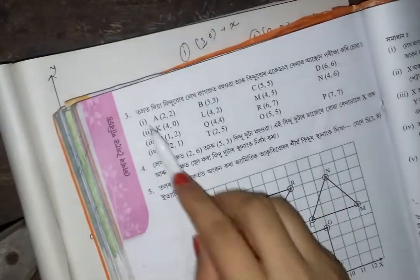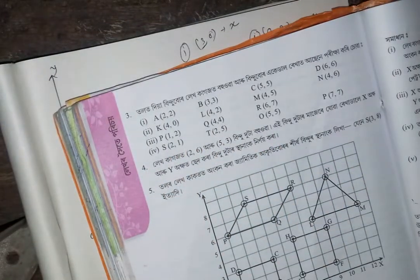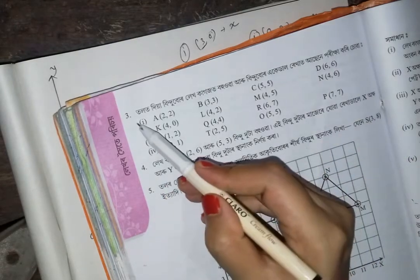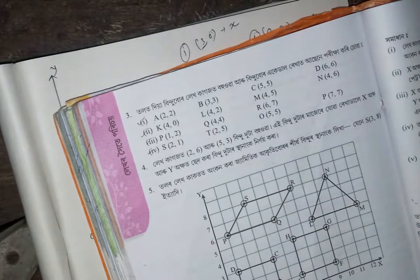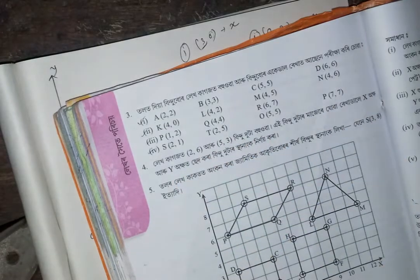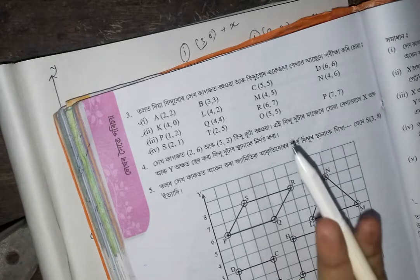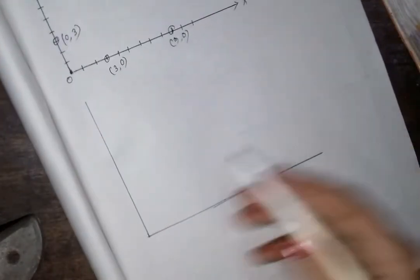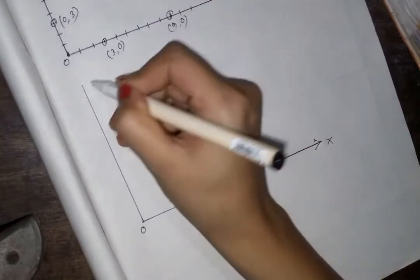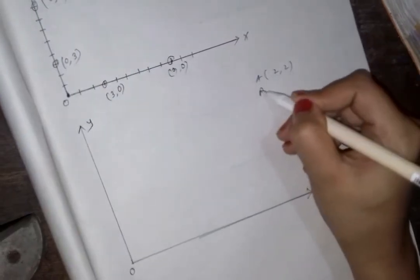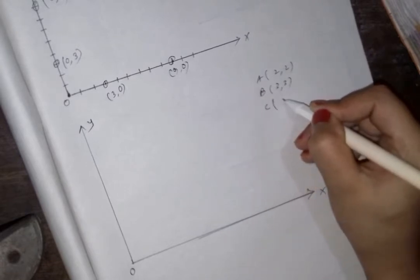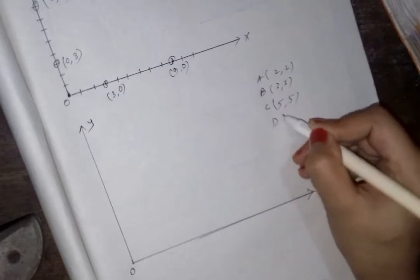This is not a function. It has to be the result of a function of the function. So we will do this. The number one. The next one is O. This is the next one. We will do this. A: 2, 2. B: 3, 3. C: 5, 5. D: 6, 6.